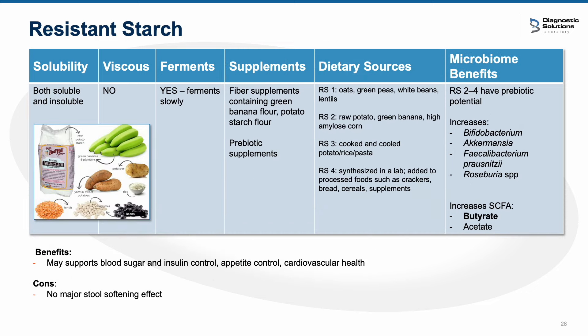Resistant starches are a type of carbohydrate that resist digestion in the small intestine and arrive in the colon, where they are fermented slowly — similar to PHGG — by the gut microbiota. There are different types of resistant starch; supplements often contain ingredients like green banana flour or potato starch flour, which fall into the RS2 category. Resistant starches with prebiotic benefit are RS2 through RS4, and benefits include increasing Bifidobacterium, Akkermansia, and butyrate producers, as well as increased SCFA production such as butyrate. These can help support low normal flora, blood sugar regulation, appetite, and cardiovascular health, though they won't have a strong effect on stool softening.